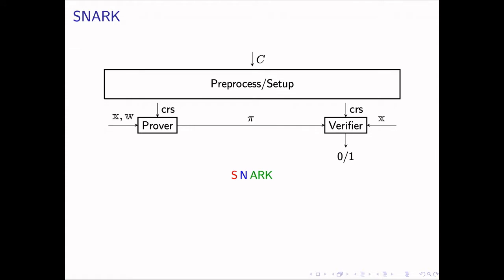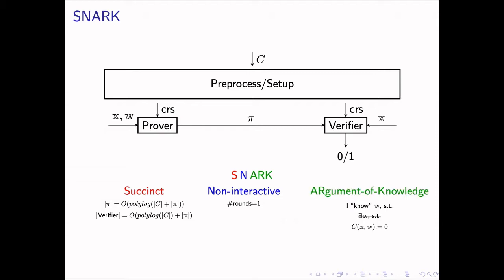A SNARK has the following properties. By succinctness, it requires that the proof size is logarithmic to the circuit size. Sometimes, this logarithmic restriction also applies to the running time of the verifier. By non-interactivity, the prover generates the proof string without receiving any information from the verifier. So one proof string can be stored and repeatedly used to convince more than one verifier. Finally, by argument of knowledge, the prover shows that the witness w not only exists but is known to the prover.